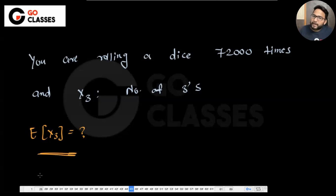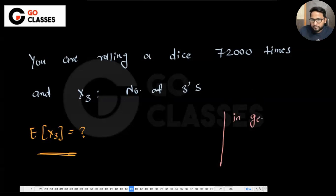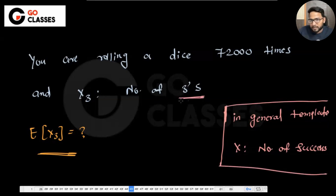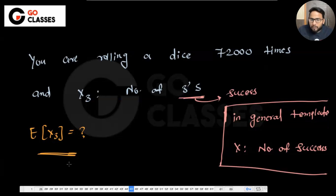In our general template, X is the number of successes. Here they are saying number of threes, so basically three is a success here. So we can say that three is a success. They are asking the expected number of successes — that is, the expected number of threes.